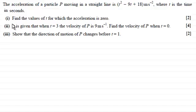There's three parts to this question. The first part is to find the values of t for which the acceleration is 0. In the second part it is given that when t equals 3 the velocity of P is 9 meters per second. Find the velocity of P when t equals 0. And finally in part 3 show that the direction of motion of P changes before t equals 1.